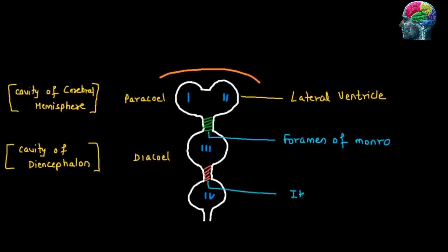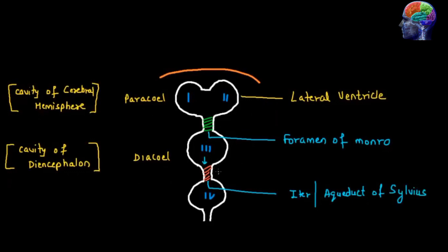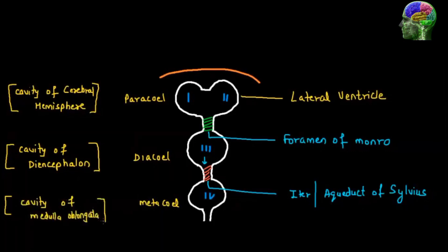The third ventricle opens into the fourth ventricle through a duct called the iter, also known as the aqueduct of Silvius. The fourth ventricle is called metacyle and is present in the cavity of the medulla oblongata. These ventricles supply nutrients and gases to the brain and also collect waste from the brain.